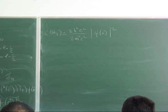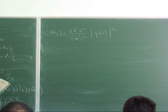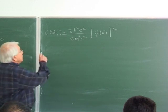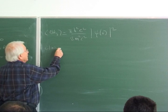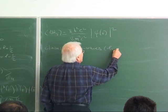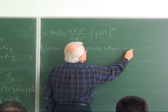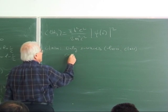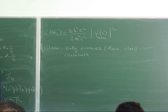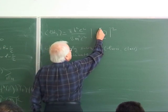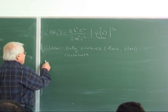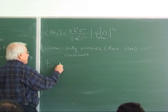I claim that only the S-waves — the L equals zero class — of the hydrogen wave functions are the ones which do not vanish at the origin. All L equals zero states contribute; all other states vanish at the origin. Let me give several examples from the table of R_NL functions to illustrate this.